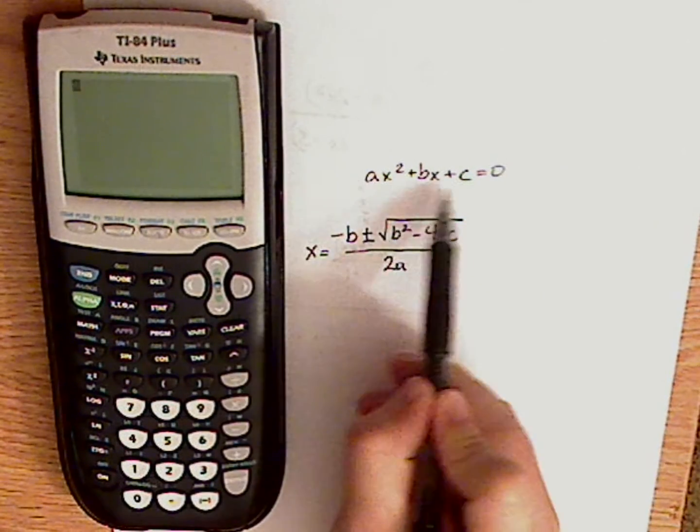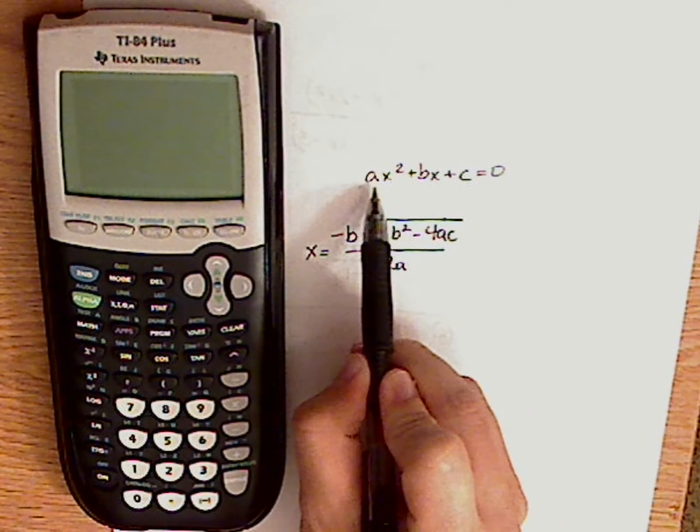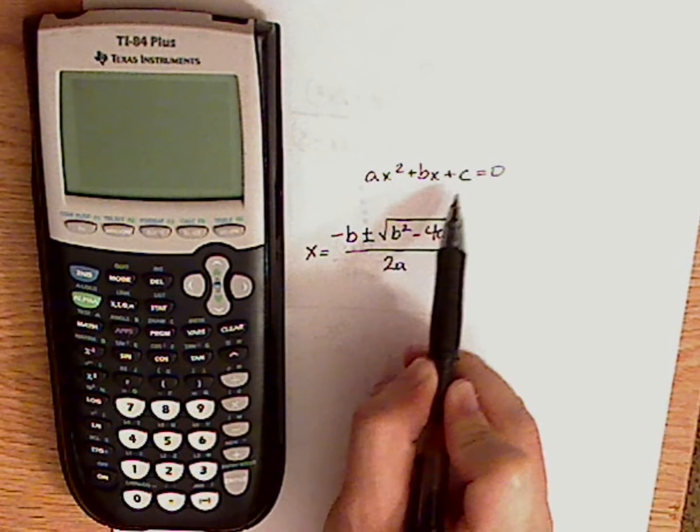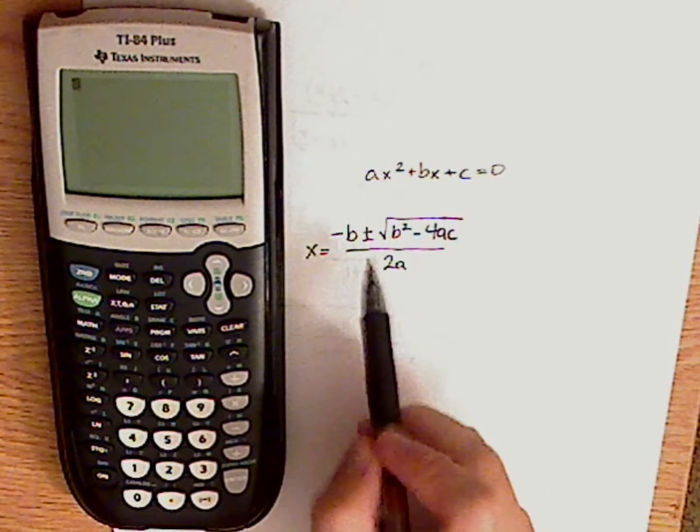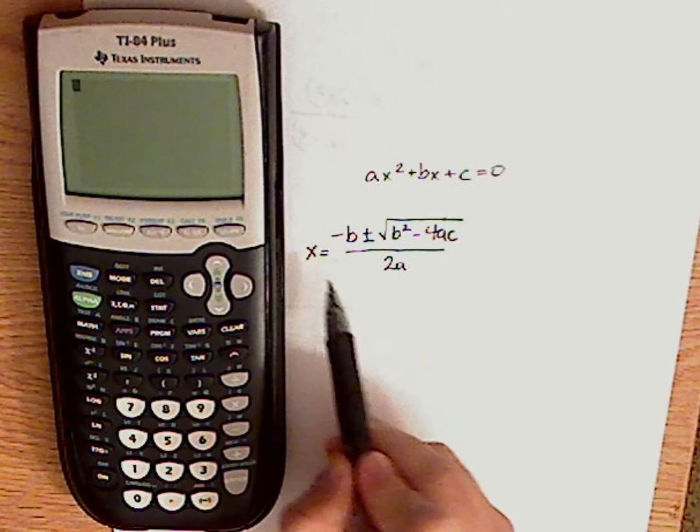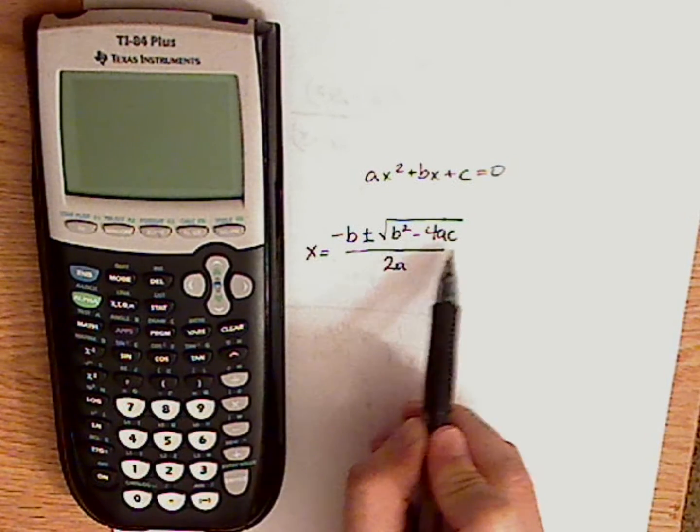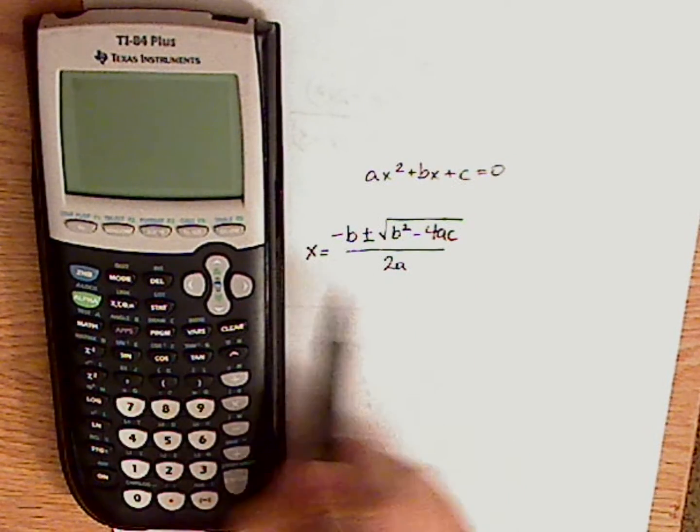Now, this is the quadratic equation. We're going to need to know that for the program, which is ax squared plus bx plus c equals 0. And the quadratic formula, just a little refresher, is x equals negative b plus or minus square root b squared minus 4ac all over 2a.